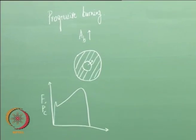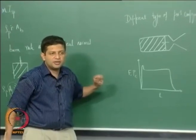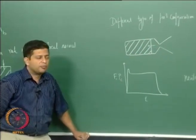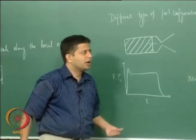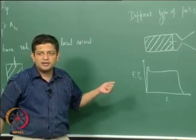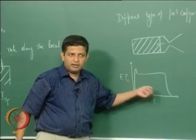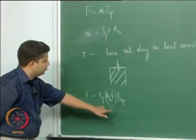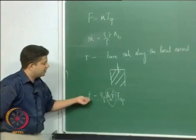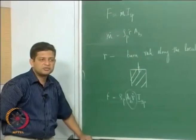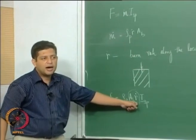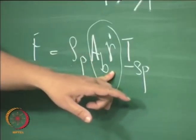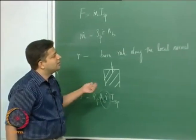If you look at all these configurations and the propellant loading that is possible, the end-burning grain will have the highest propellant loading because you are utilizing the entire volume. But in any other case, if you want the burning surface area to be large, then the burn rate will be a little lower and the loading will also be lower. If you want the required thrust and A_B is limited, you have to have a very high R_dot. These kinds of configurations are therefore seldom used.